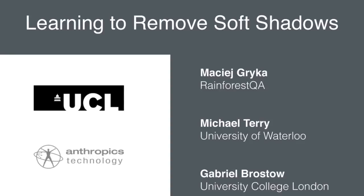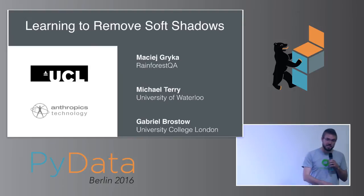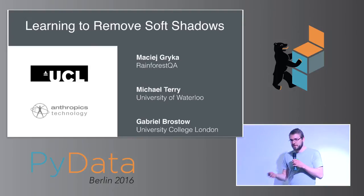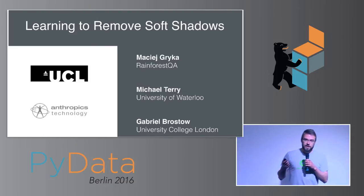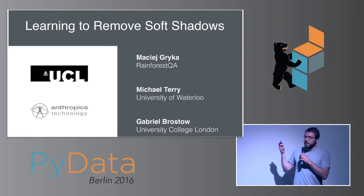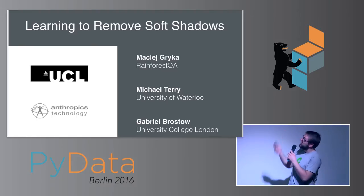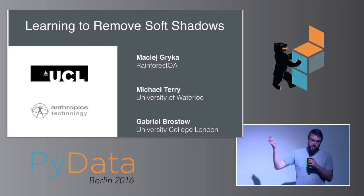My name is Maciej. I live in Potsdam and I work for Rainforest QA, which is a startup based in San Francisco. But today I'm not going to tell you about any of that. Instead I'm going to talk about part of my research in computer vision — work that we presented at SIGGRAPH last summer. It's also part of my PhD thesis, done together with Michael Terry in Waterloo and Gabriel Brostow at UCL in London, who was my supervisor.